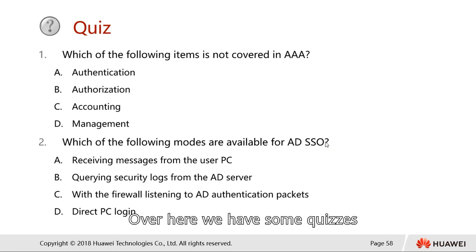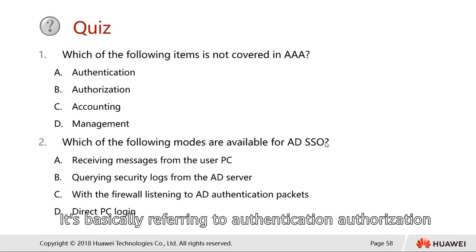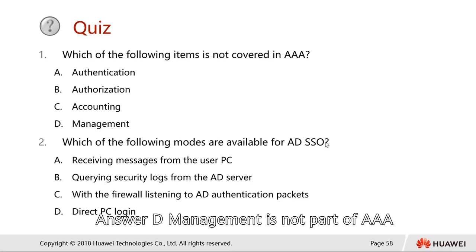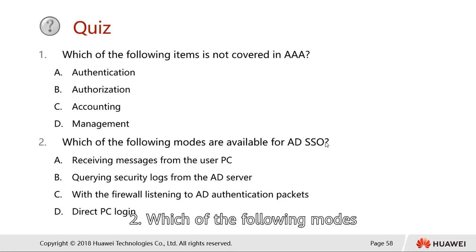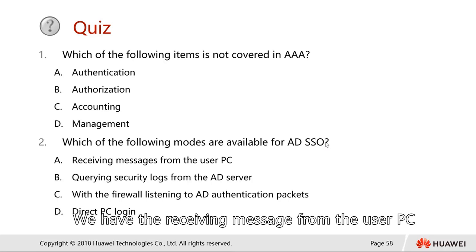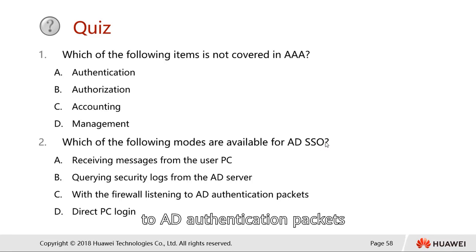Question one: which of the following items is not under AAA? AAA refers to authentication, authorization, and accounting. Answer D — management — is not part of AAA. Question two: which modes are available for Active Directory single sign-on (AD SSO)? The answer is A, B, and C — receiving messages from user PCs, querying the security log from the AD server, or the firewall listening to AD authentication packets.